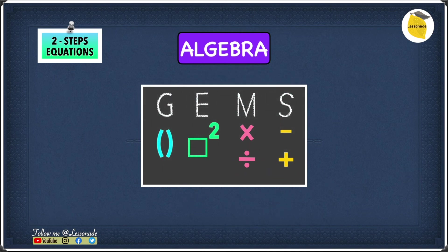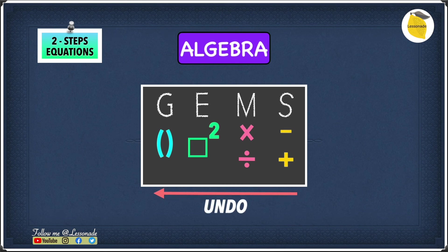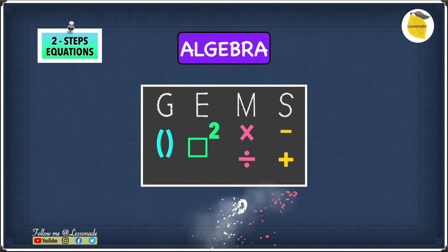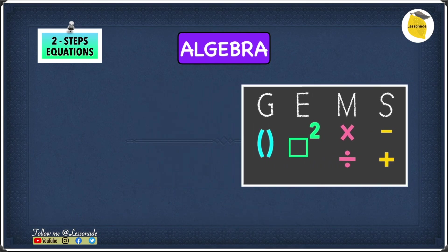However, in algebra when you're working backwards — undoing operations — you go the other way around, starting from subtraction and addition and working back to groups. So you do the opposite of how you follow the order of operations.